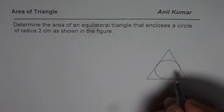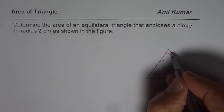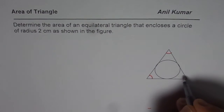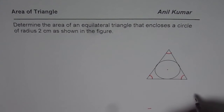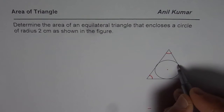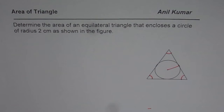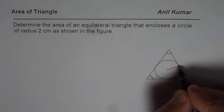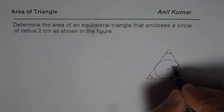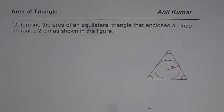What we have here is an equilateral triangle — a special case where all angles are equal, so each angle is 60 degrees. We have a circle in the center, and the radius is 2 cm. That means from the center to the edge where the side of the triangle forms a tangent line is 2 cm.